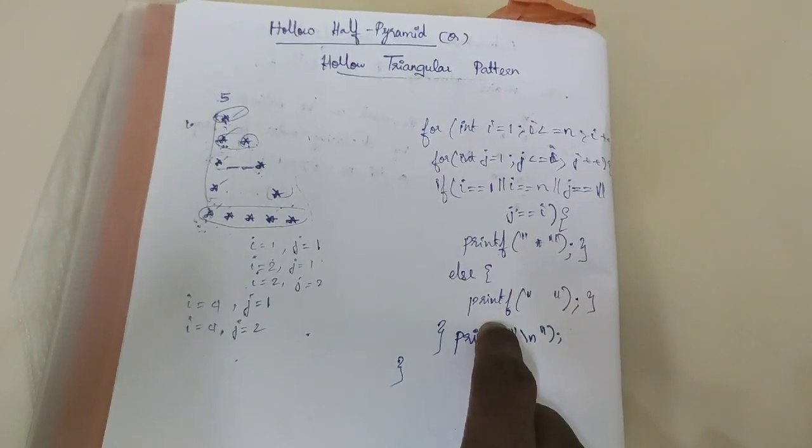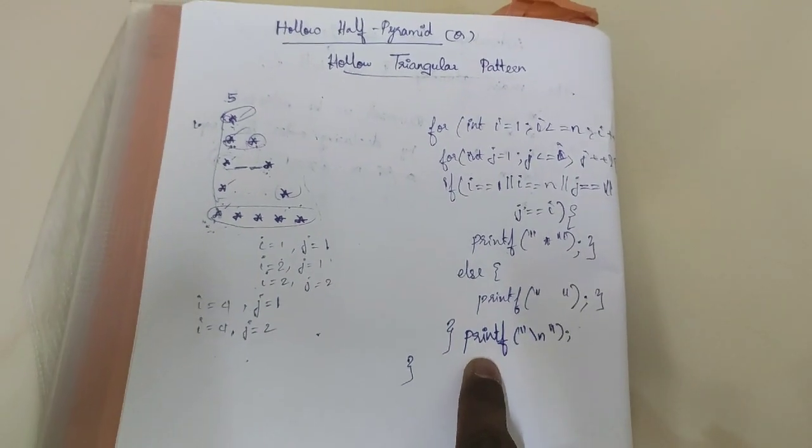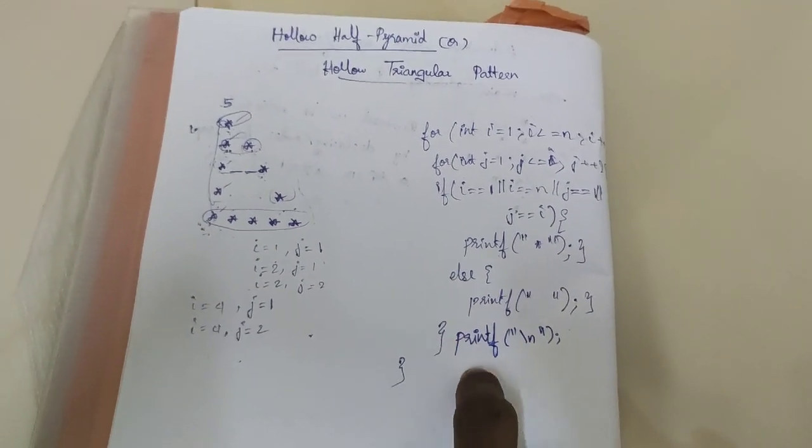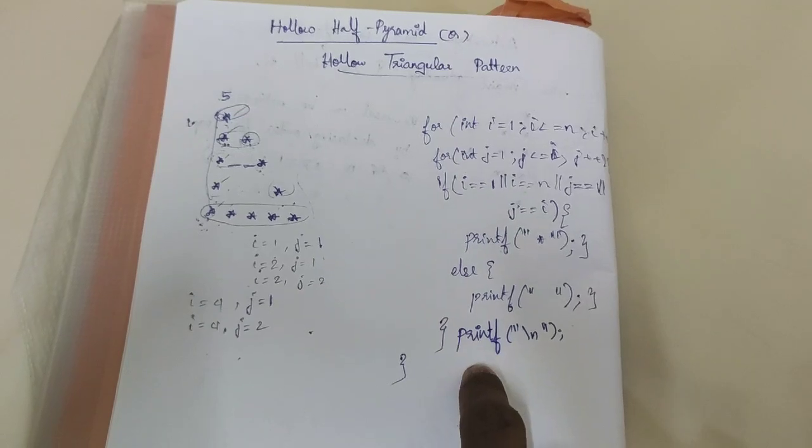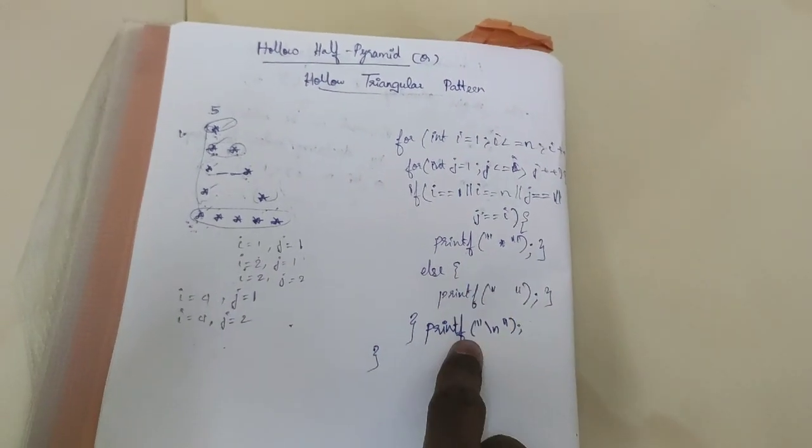I had forgotten to print a new line in the previous video, so please make it noted: print of a new line, and then close the outer for loop. Because if you don't give this command, you will not get the output in the form of rows.